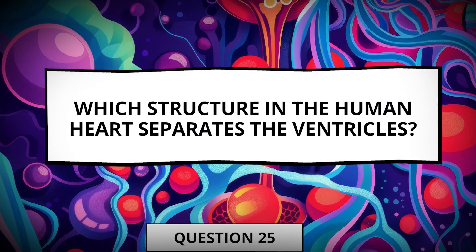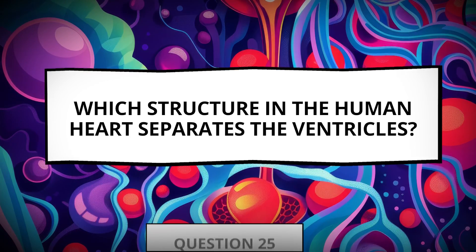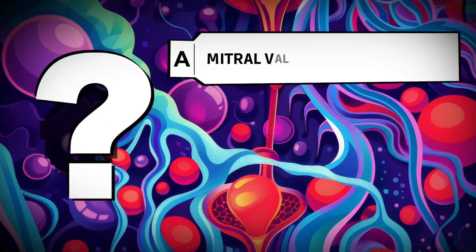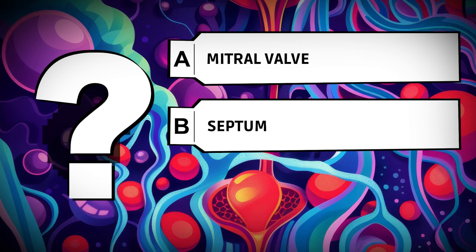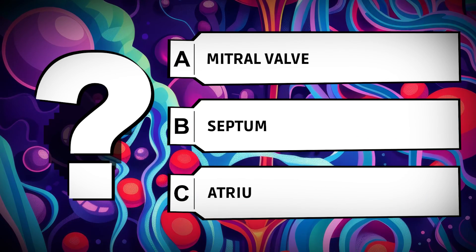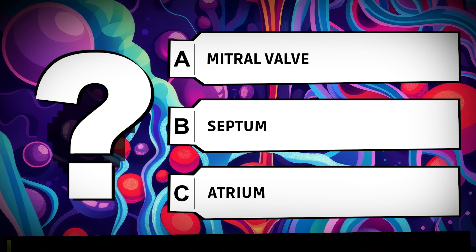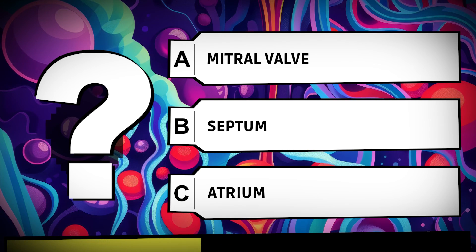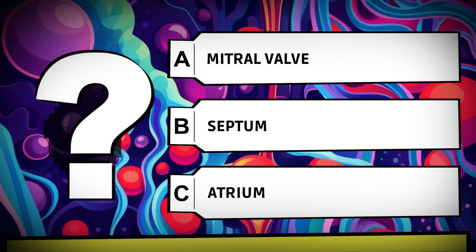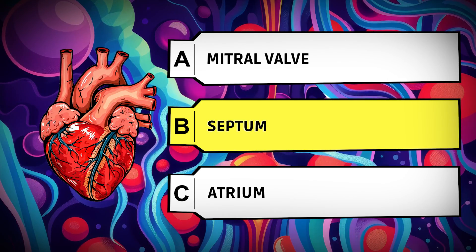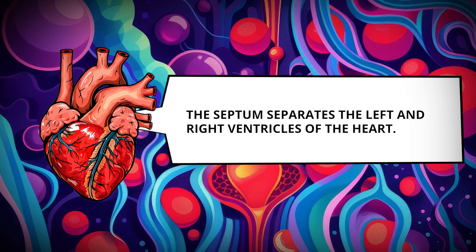Which structure in the human heart separates the ventricles? Mitral valve. Septum. Atrium. The septum separates the left and right ventricles of the heart.